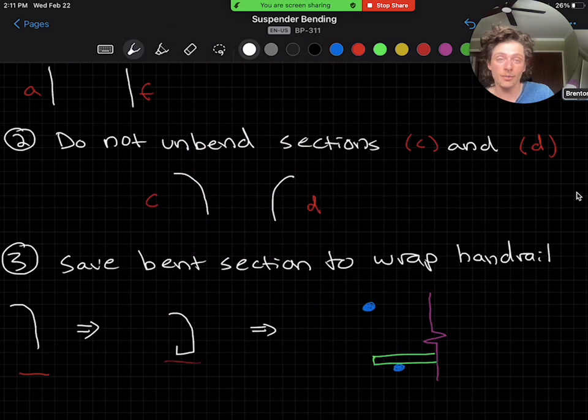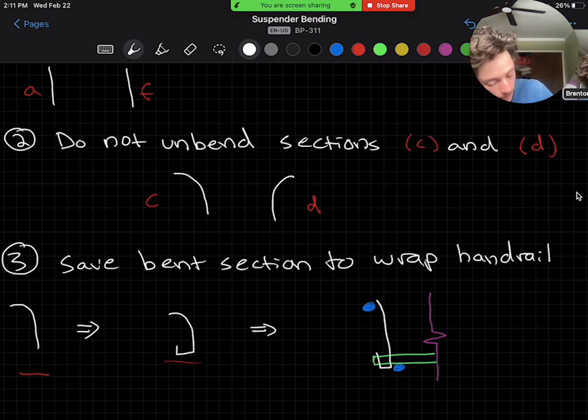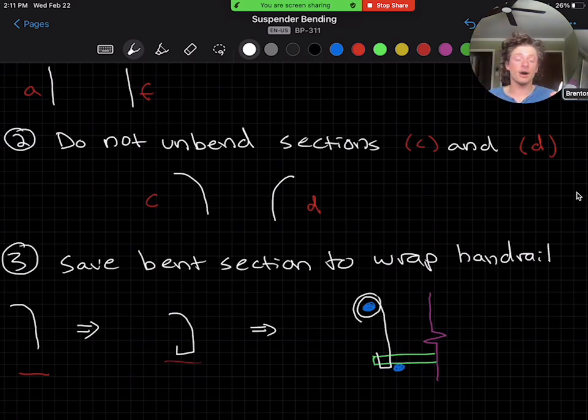But then when we actually go to install that rebar, we'll install it with its hook in the crossbeam, and we'll have that bent section match up. That's the part that actually gets wrapped around the handrail cable.